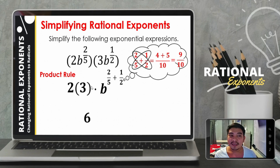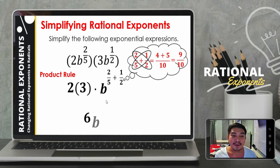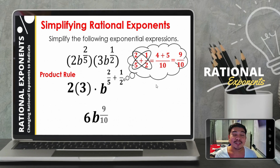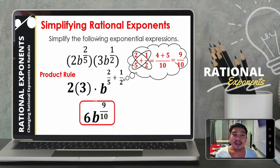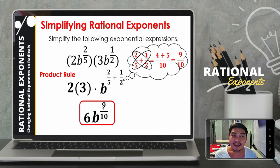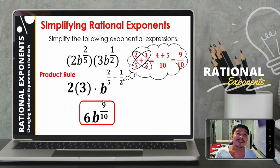2 times 3 equals 6. The exponent of b is 9 over 10. Therefore, the simplest form of the given expression is 6b raised to 9 over 10.